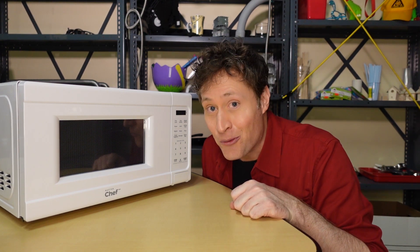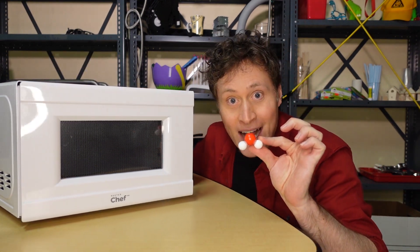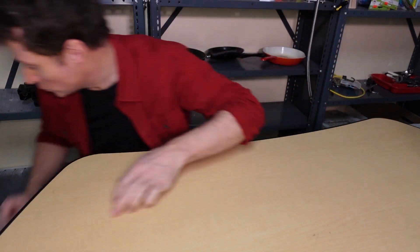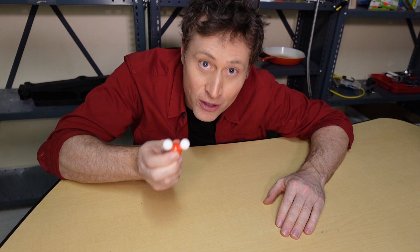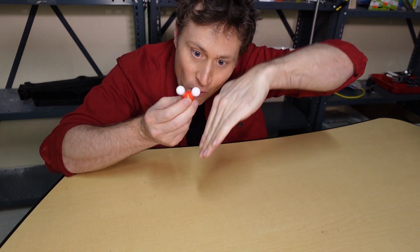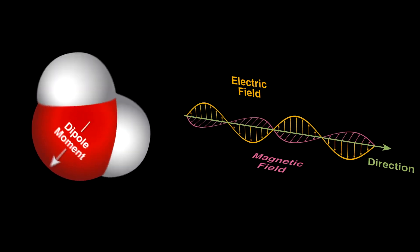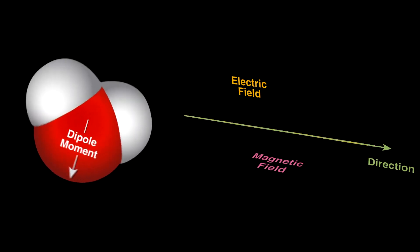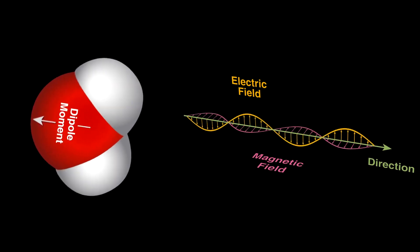Anyway, how does a microwave heat your food? Well, it all has to do with water being magnets — water is magnets. Water has positive and negative charges, and what happens when the microwaves go through is the water molecules react to that wave. Sometimes they'll go up, but when the wave goes down it'll flip the molecule over, and then the wave goes back up and it flips the molecule back. It flips it and flips it, and that flipping makes the molecules have more energy — and if they have more energy, they have heat.